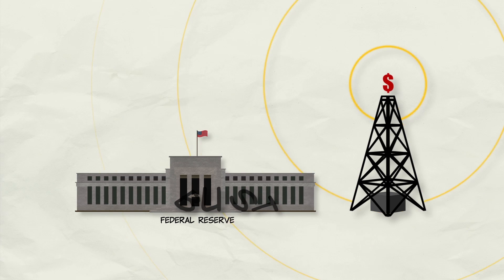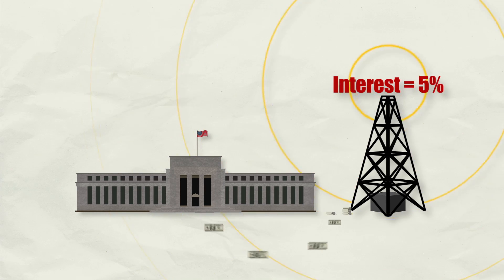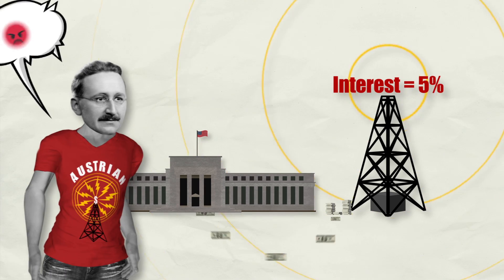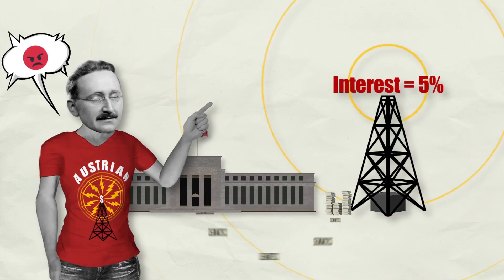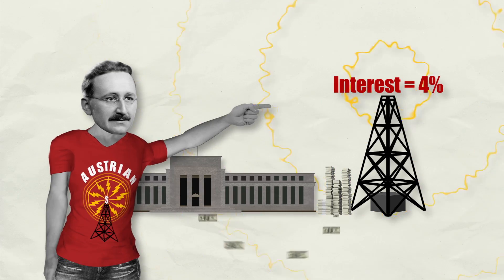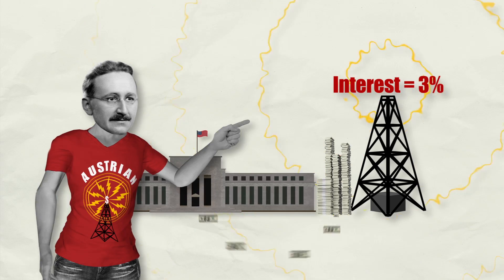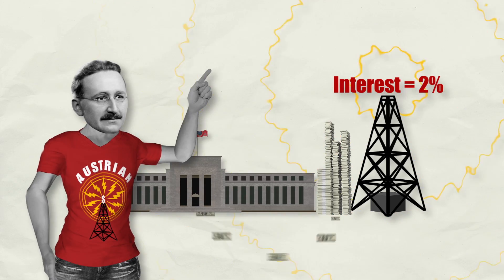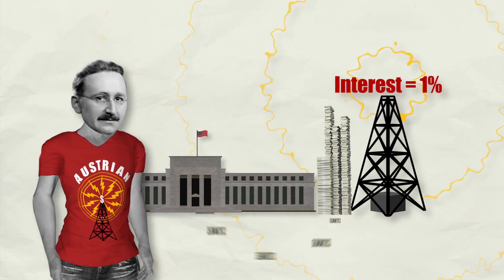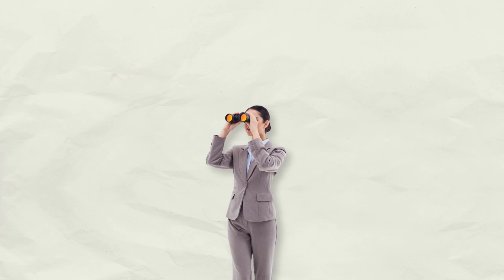So the basic scenario is this. Imagine a central bank that sets out and increases the rate of inflation. For the Austrians, this is very often a bad idea. There's new credit put into the system, and that lowers market rates of interest. But the Austrians stress the point that this lower rate of interest and the extra credit are not market phenomena — they're due to the plans of the central bank.